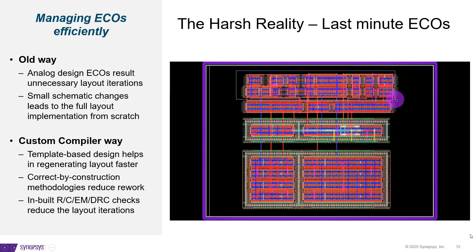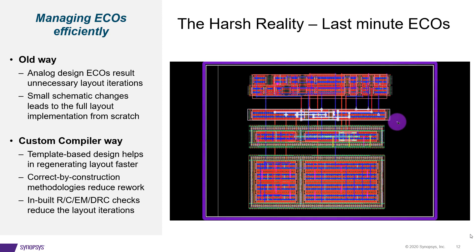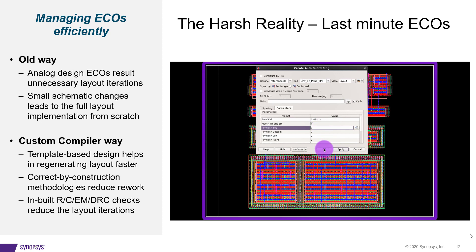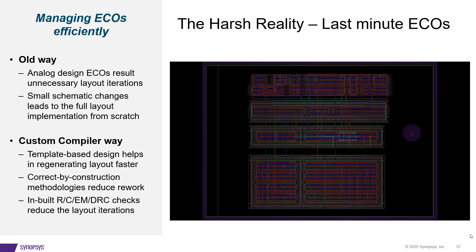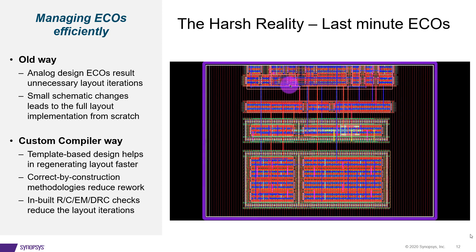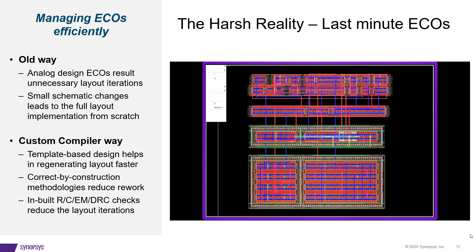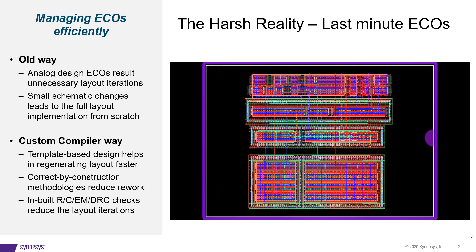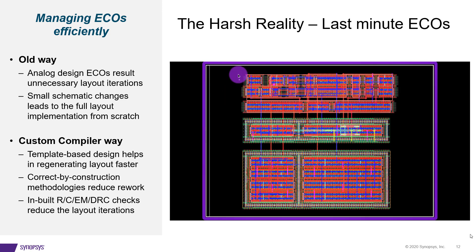One challenge in complex analog design is that things don't always go according to plan. For a large analog block like our example, one designer may be tweaking the schematic and re-simulating, another tweaking the layout, and another changing the routing. This reflects reality, not a broken flow. If you wait until the schematic is finished to start layout, you won't finish in time. And small schematic changes at a later stage result in costly layout iterations. We cannot eliminate ECOs, but we can manage them efficiently with better custom design flows.